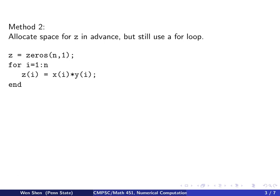Let's look at our second method, that is, I am going to allocate the space for z in advance, and I still use a for loop. So before the for loop, I will allocate the space.